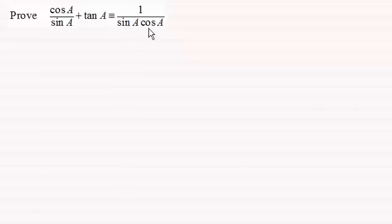Hi there. For this identity we're asked to prove cosine a divided by sine of a, plus the tan of a, is identical to one all divided by sine a times the cosine of a. If you'd like to have a go at this one, just give you a moment to pause the video. When you come back you can either fast forward just to check the method, or take you slowly through the worked solution.